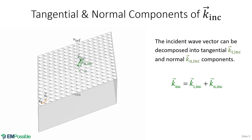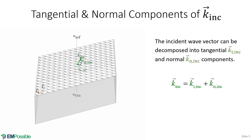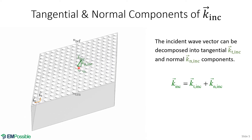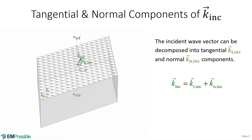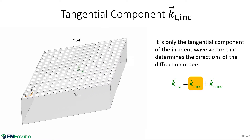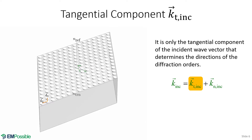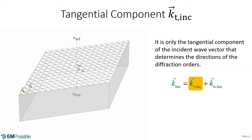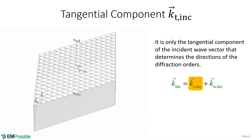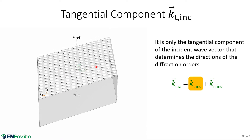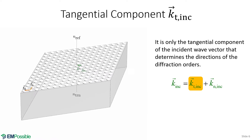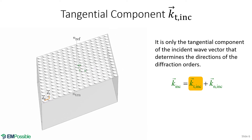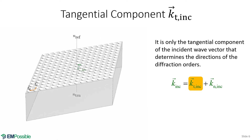We take our incident wave and decompose it into a normal component and a tangential component. The tangential component is along the same plane as the grating, and the normal component is straight up and down. For the purposes of calculating the direction of the diffraction orders, it is only the tangential component of the wave vector that matters — the normal component doesn't enter into this at all. It's the tangential component that sets up the periodicity of the wave incident onto the grating, and that period mixes with the period of the grating to give us all the sum and difference frequencies, leading to the diffraction orders.